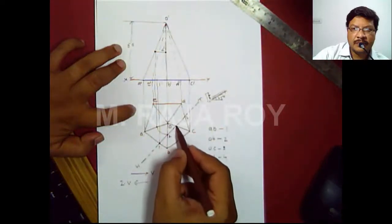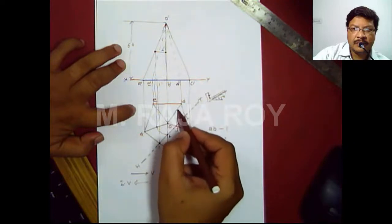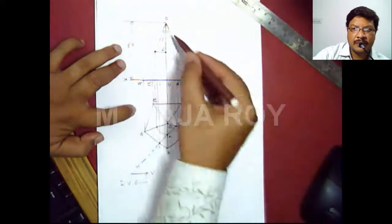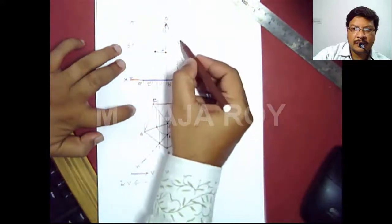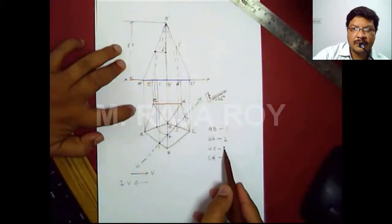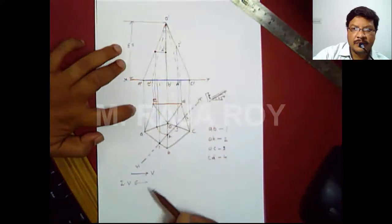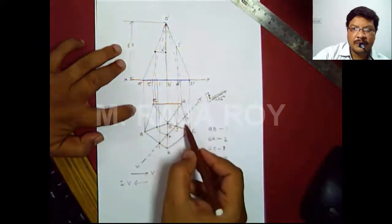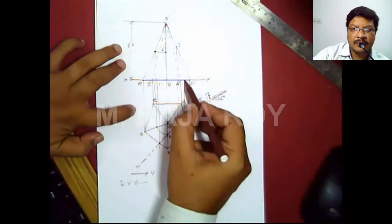Next, point 3 is on OC. Draw the projector and directly get the intersection point on O'C' — this is 3'. The 4th point is on CD, which is on the base, so somewhere here you will get the 4th intersection point. This is 4'.